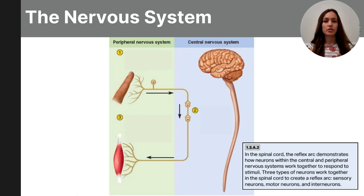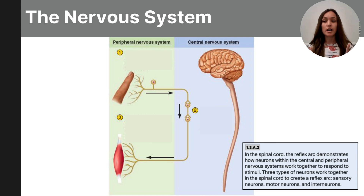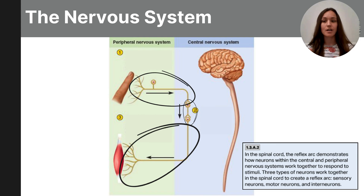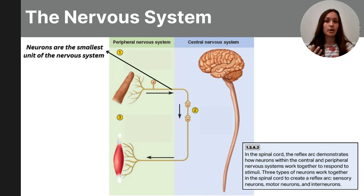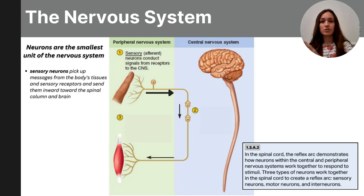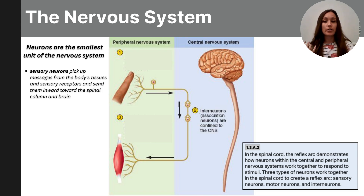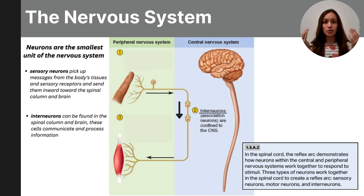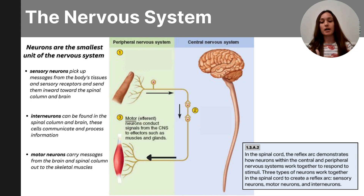As we continue, we will break down the nervous system into smaller and smaller parts. The nervous system consists of the brain, the spinal cord, and the nerves. Within all of our nerves are neurons — the smallest cells making up our nervous system. There are three different types: sensory neurons, which carry messages from the body's tissues and sensory receptors inward toward the spinal column and brain; interneurons, found in the spinal column and brain, used to communicate and process information; and motor neurons, which take messages away from the spinal column and brain out to the skeletal muscles.